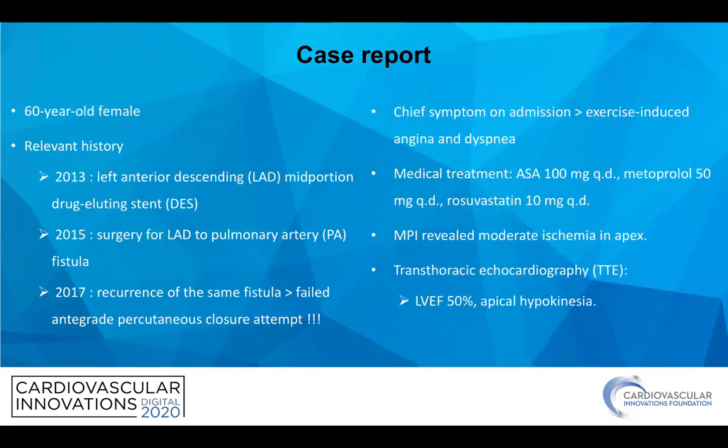She came to us with symptoms of exercise-induced angina and dyspnea. On her medical treatment she was taking aspirin, metoprolol, and rosuvastatin. Her stress imaging tests revealed moderate ischemia in the apex, and echocardiography findings were also similar.